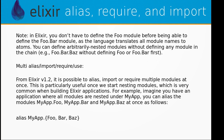Multi alias/import/require/use: from Elixir version 1.2 it is possible to alias, import, or require multiple modules at once. This is particularly useful once we start nesting modules, which is very common when building Elixir applications. For example, if you have an application where all modules are nested under MyApp, you can alias MyApp.Foo, MyApp.Bar, and MyApp.Baz at once.